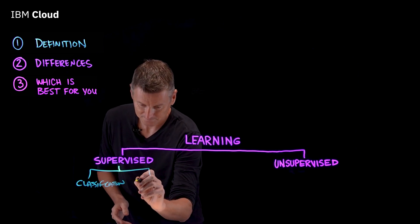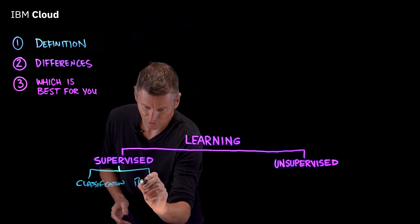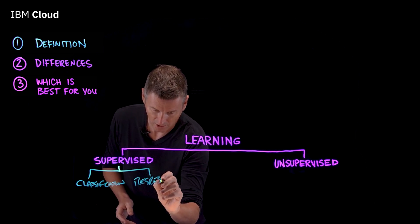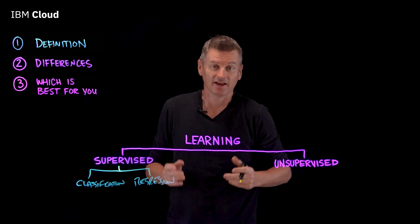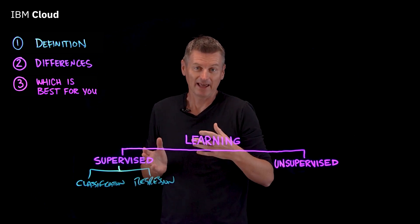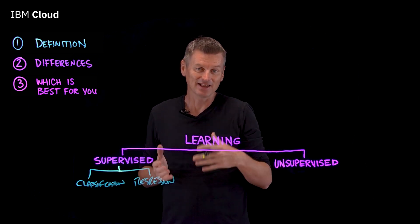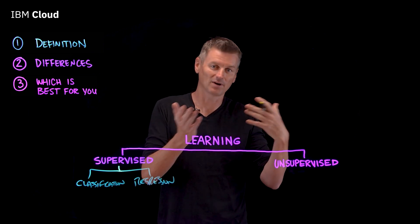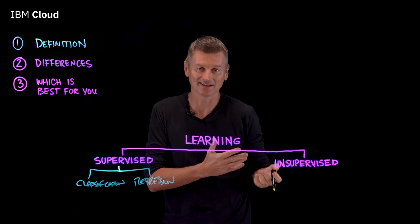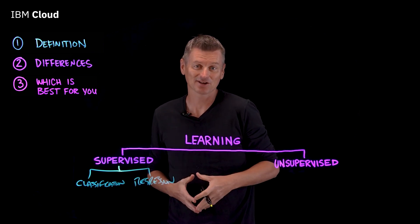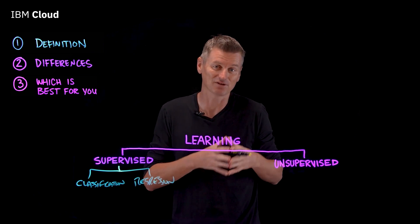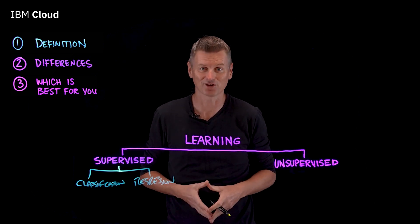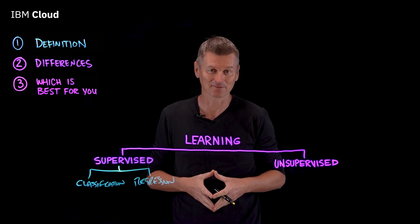The other subcategory is regression. The output here is a continuous value, such as price or probability. Linear regression and logistic regression are two common types of regression algorithms.